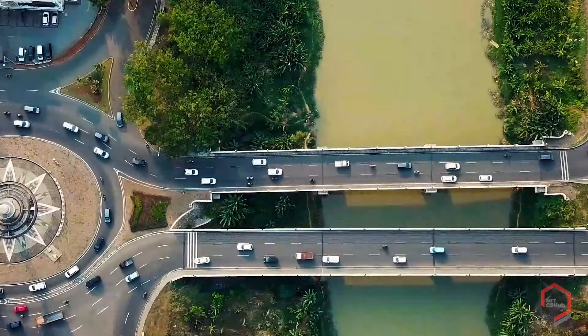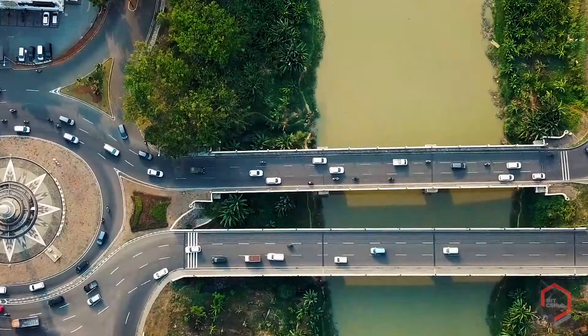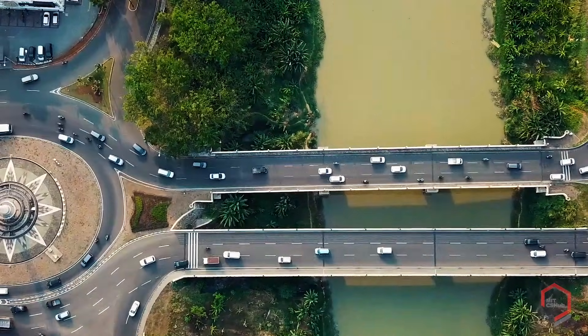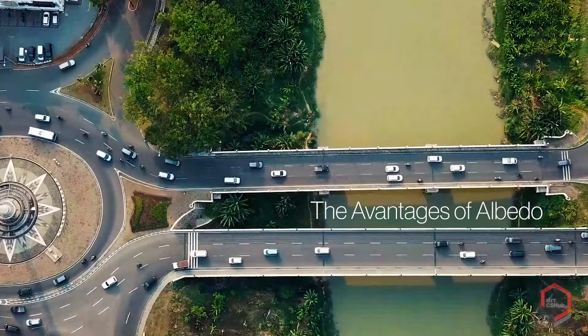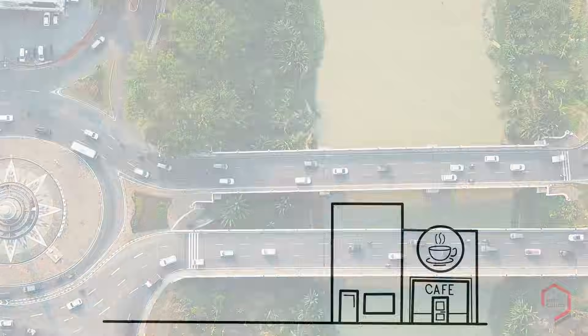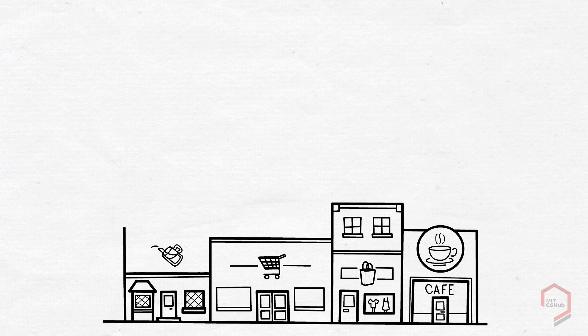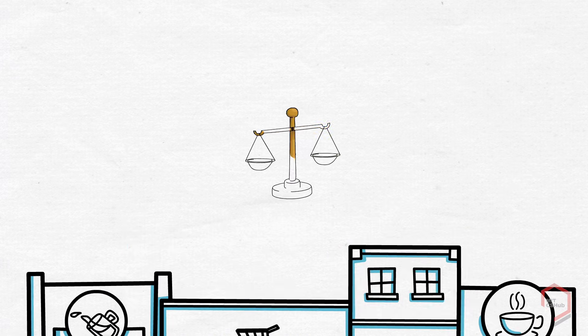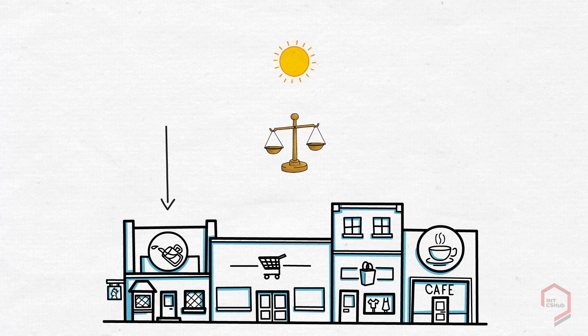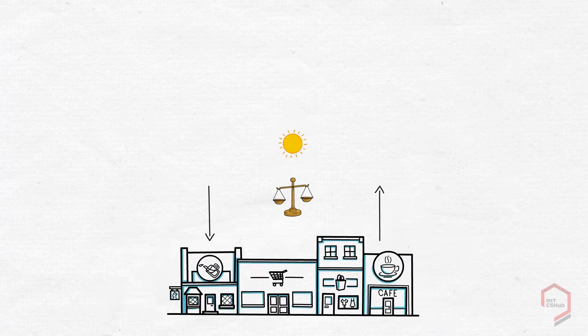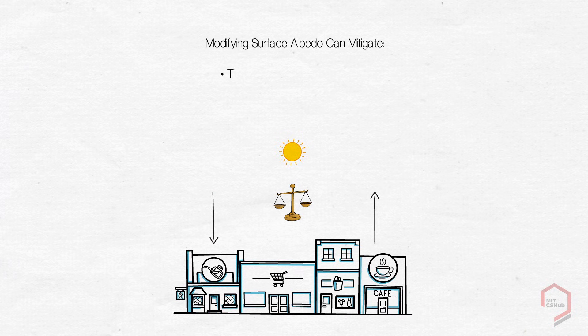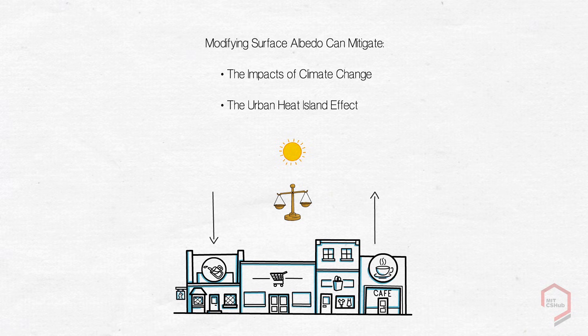So at first glance, the albedo of urban surfaces seems pretty destructive. But that isn't always the case. We can actually use albedo to our advantage. By modifying the reflectivity of surfaces around us, we can directly impact the relationship between the amount of energy absorbed by the planet and the amount leaving it. This has the potential to significantly mitigate the impacts of climate change and the urban heat island effect.